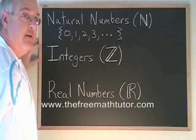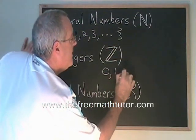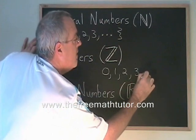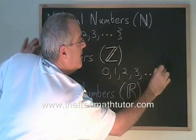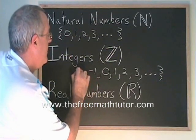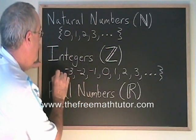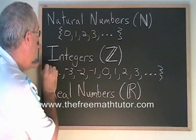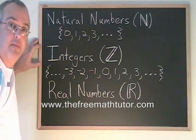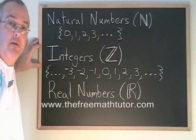Integers is very similar. You have the number 0, you have 1, 2, 3 going on and on in the positive direction, but you also have negative 1, negative 2, negative 3 going on and on in the negative direction. Integers includes the natural numbers and the negative whole numbers too.